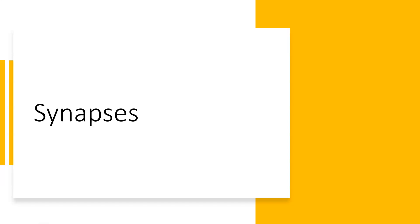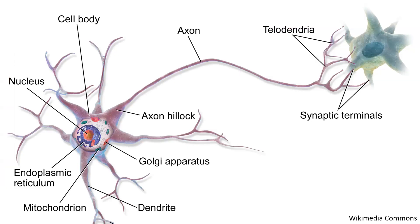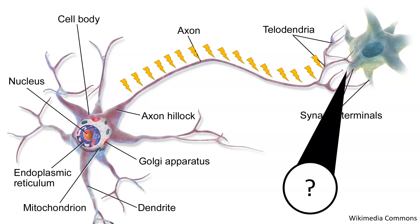Hey there class. In this lesson we'll be going over how neurons transmit information. Last time we learned that neurons sent information down their axons through action potentials. The question now is, once the action potential reaches the axon terminal, how does this information get transmitted from this neuron to the next? Let's zoom in to where these two neurons interact with one another.